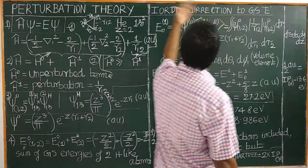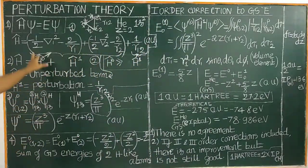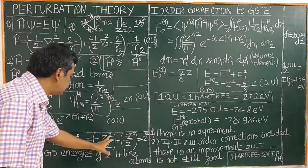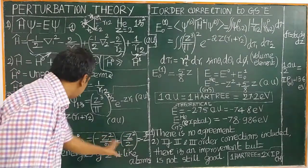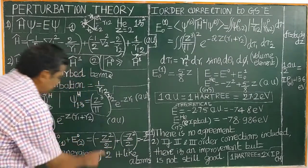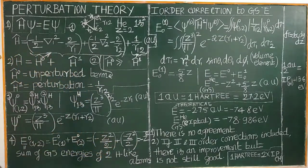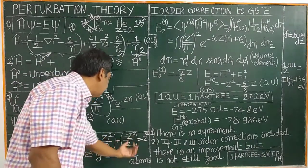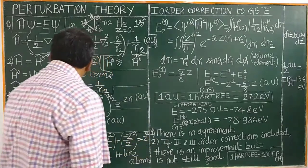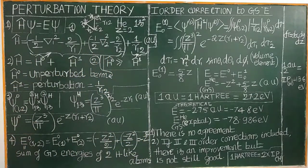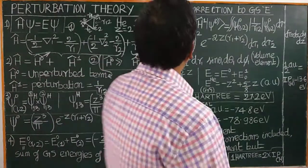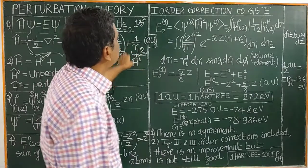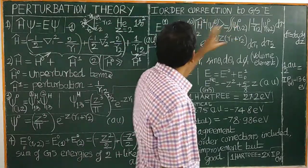First order: let us see the first-order correction. We know the energy is −Z²/2 for a hydrogen-like atom — this is already solved mathematically. The energy of the unperturbed helium atom is the sum of two such hydrogen-like atom energies. Let us now come to the perturbation energy: first-order correction to ground state energy.